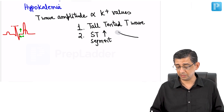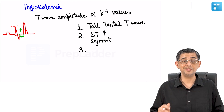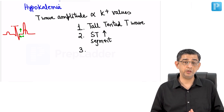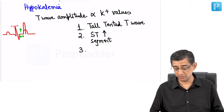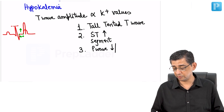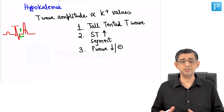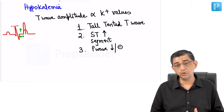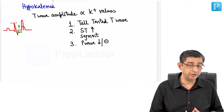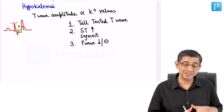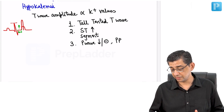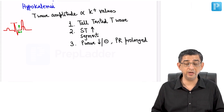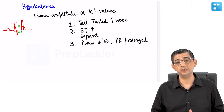In hyperkalemia, the repolarization vector becomes more prominent while the depolarization vector becomes relatively less prominent. Therefore, the P wave — the first wave of the ECG — begins to get smaller. At potassium values hitting 7 milliequivalents or more, the P wave may even be absent. This gives us a third condition for absent P waves, alongside atrial fibrillation and sick sinus syndrome. Additionally, because depolarization speed is affected, the PR interval will be prolonged.